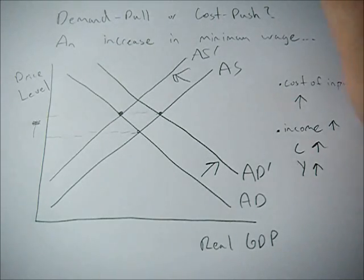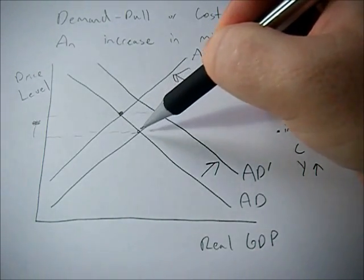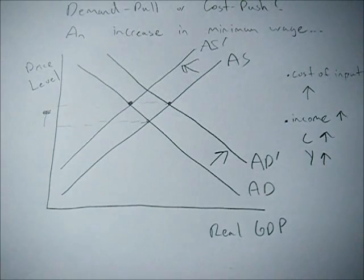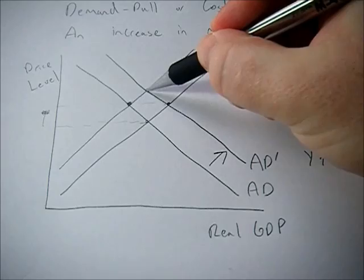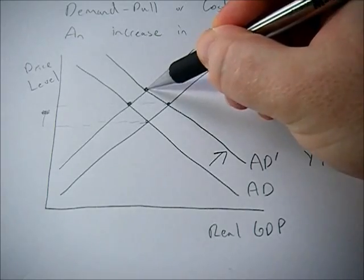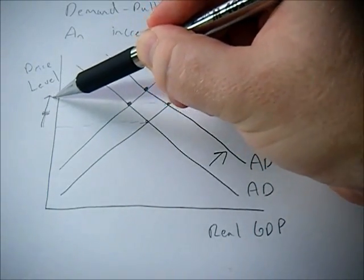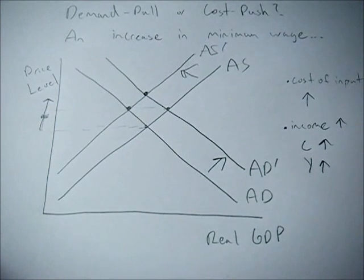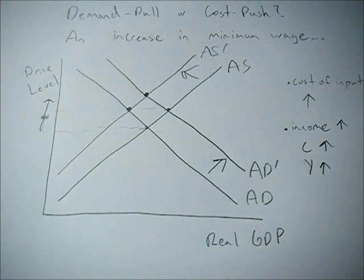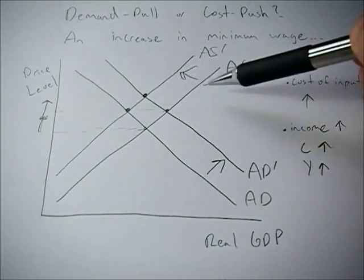But we're having both things happen at once — an increase in aggregate demand and a decrease in aggregate supply. That means our new equilibrium point occurs at a much higher price level because we have both demand-pull and cost-push inflation happening at the same time.